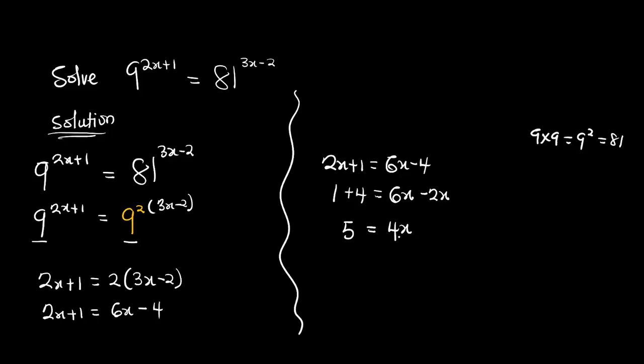Dividing both sides by 4, the value of x is 5 over 4.